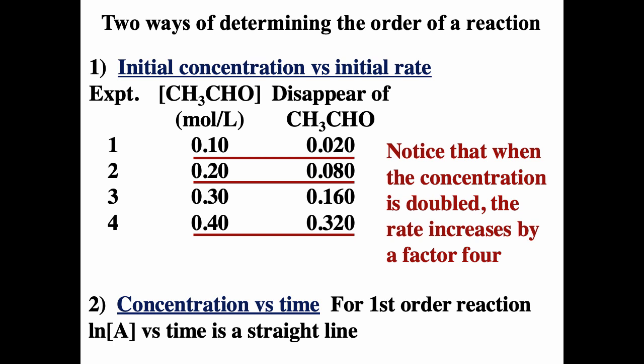There are two ways of determining the order of a reaction. One way is by looking at how the initial rate changes when the initial concentration is changed. In this data we see that the concentration is doubled, the rate is now four times as fast. That tells us it's second order with respect to our reactant. So that's one way of determining the rate equation or rate law.